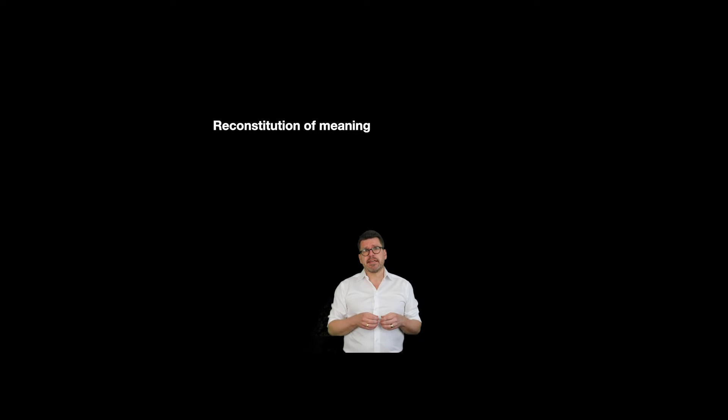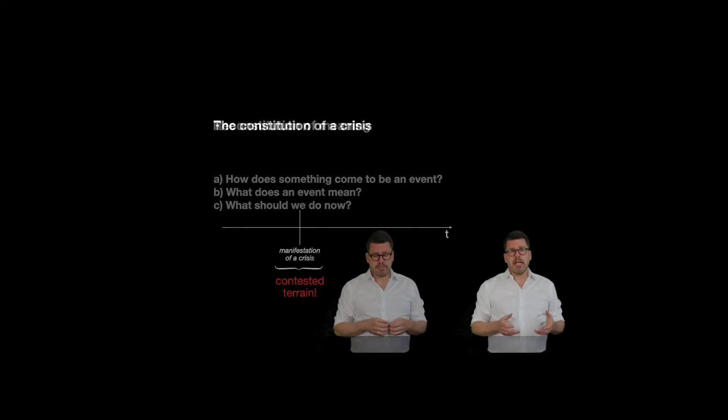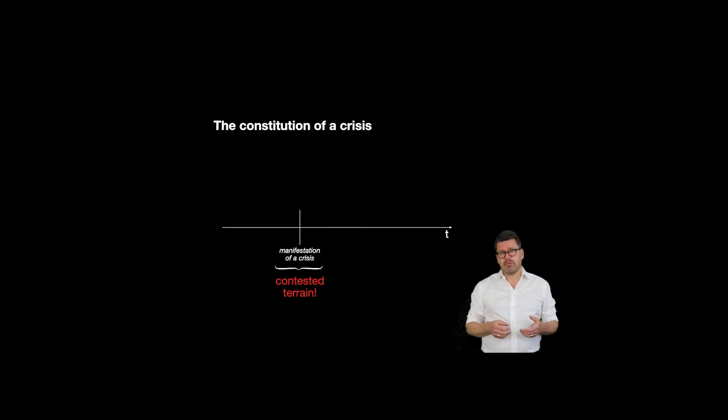In general, sense-making implies three steps. How does something come to be an event? What does an event mean? And what should we do now? If we take points A and B together, an event must first be framed as a crisis. And crisis framing is always contested terrain. What is easier to restore or maintain normal sense and continuity experience than not to frame an event as a crisis?